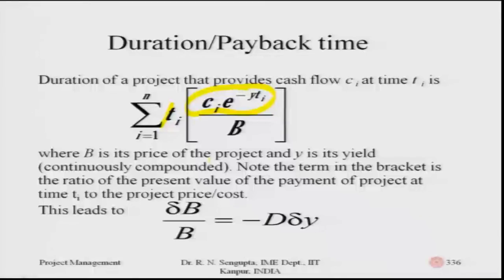The term in the bracket is the ratio of the present value of the payment at time TI to the project price. Taking the derivative gives: ΔB/B = −D × ΔY, where D is duration and ΔY is the change in interest rate. With this I end the twenty-seventh class. The twenty-eighth class will relate to the PERT problem. Have a nice day, and for any queries please get in touch via the forum. Thank you very much.